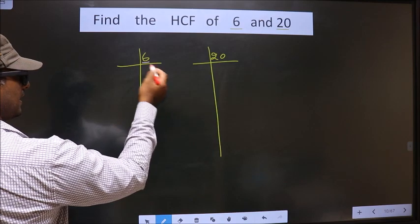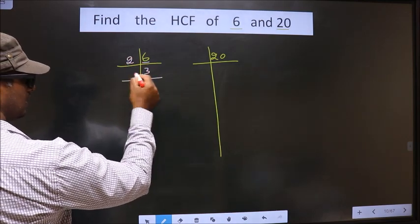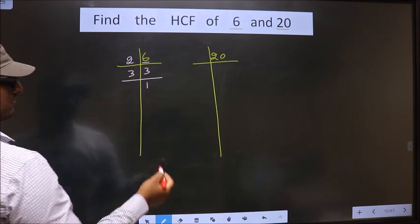Now, 6 is an even number, so I take 2 here. 2, 3, 6. Now, 3 is a prime number, so 3 and 1.